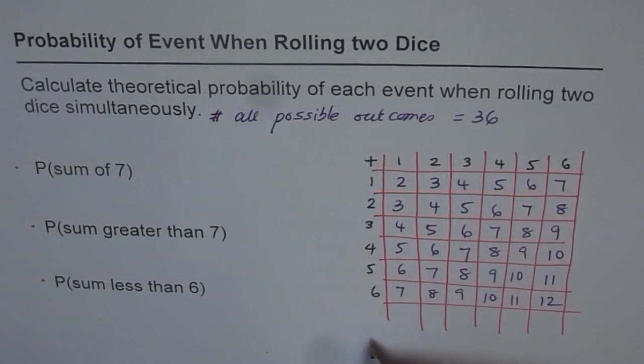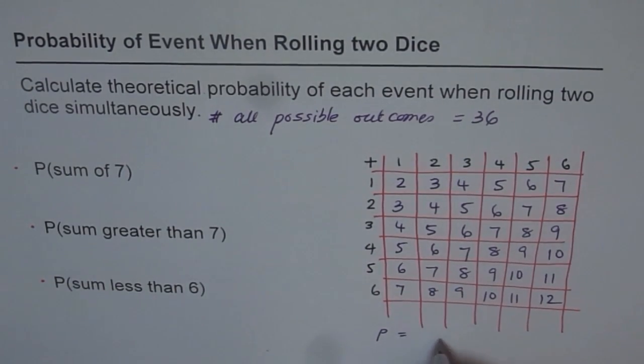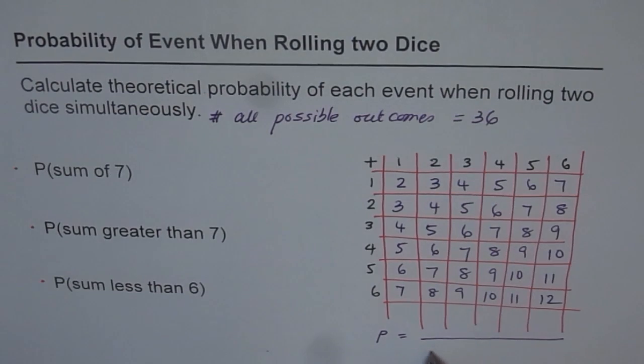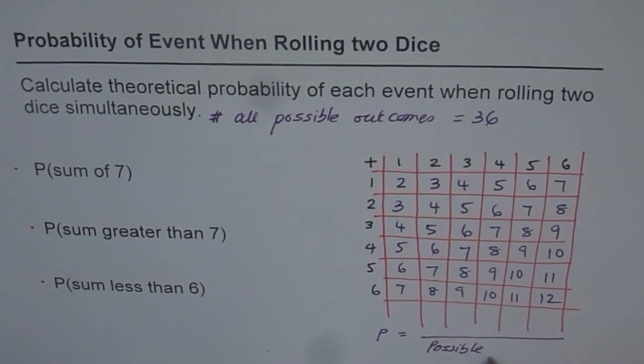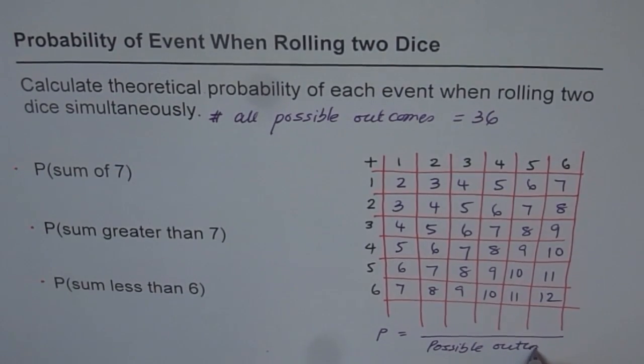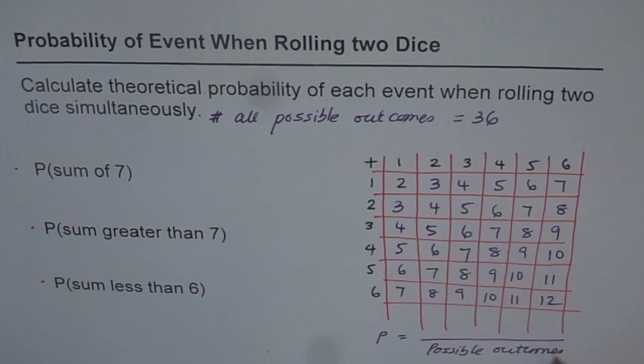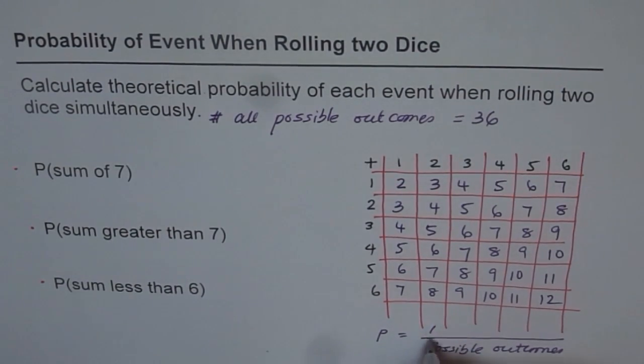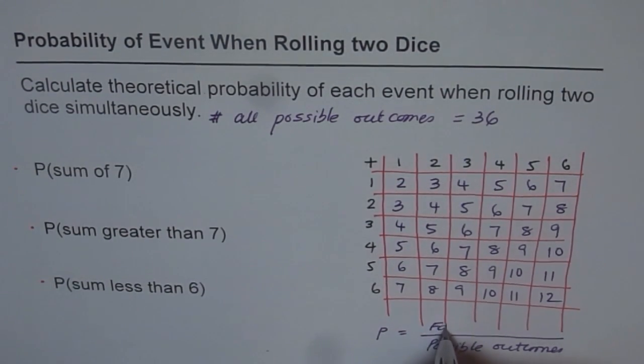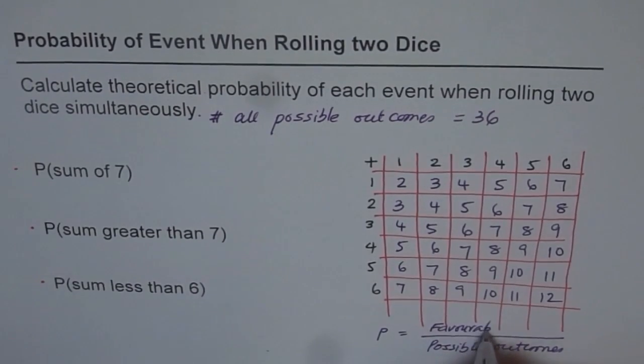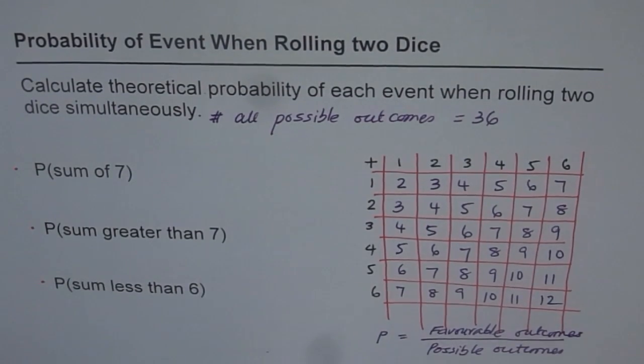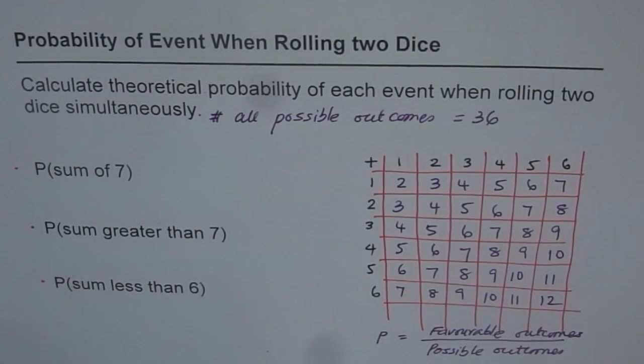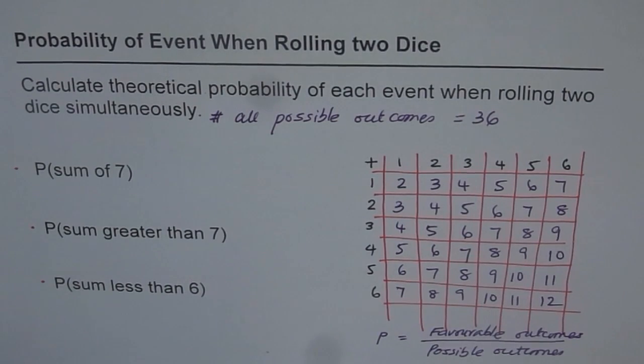So probability which we are trying to figure out will equal favorable outcomes over total possible outcomes. The numerator has favorable outcomes. Their ratio is going to give us the probability answer.